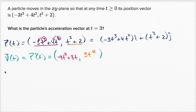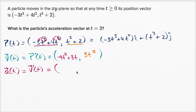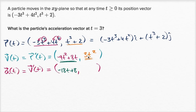To find the acceleration vector-valued function, we take the derivative of the velocity function with respect to time. For the x component: two times negative nine gives negative 18t, plus the derivative of eight t which is just eight. For the y component: applying the power rule to three t squared gives six t.